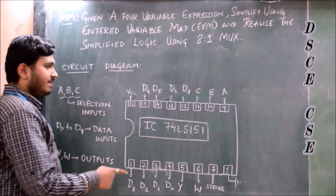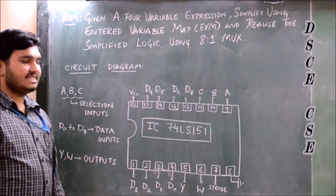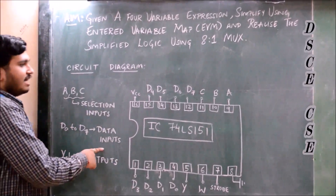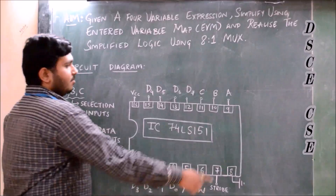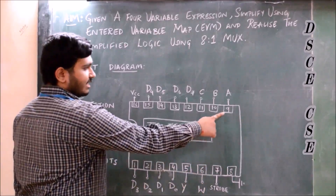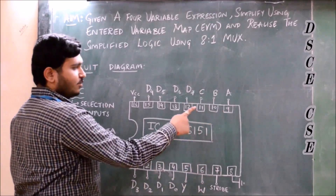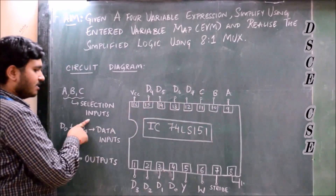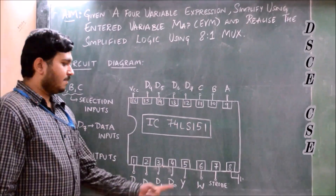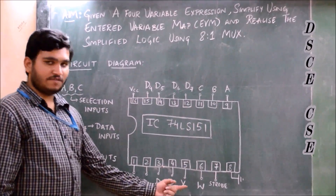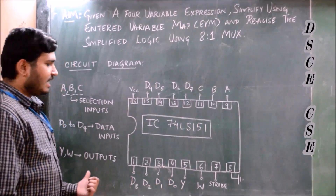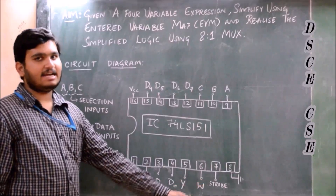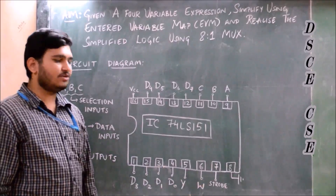All these from D0 to D7 are the data inputs. Pin number 9 is connected to A, then to B, and 11 to C. A, B, C are the selection inputs. Pin number 6 is one of the outputs, and pin number 7 is shorted with pin number 8 and then connected to ground.